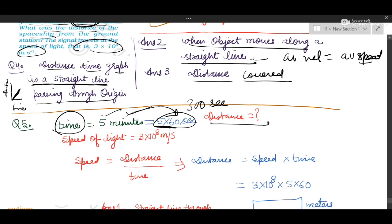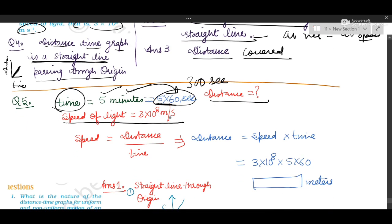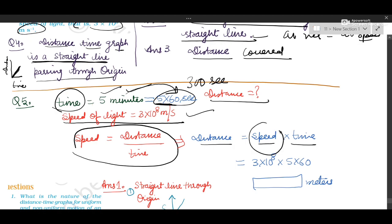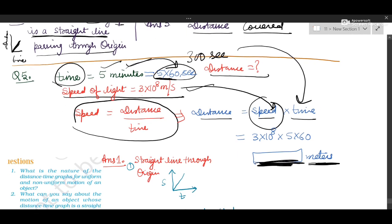What is to be found is distance — they asked what was the distance of the spaceship. Speed of light is 3 lakh km per second, or 3 × 10⁸ meters per second. We use: Speed = Distance / Time, so Distance = Speed × Time. Put speed as 3 × 10⁸ and time as 300 seconds, multiply, and report the answer in meters.